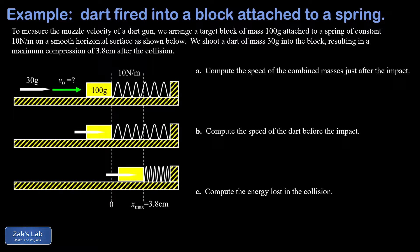In this video, we're analyzing the impact of a dart with a block. The dart and block combination compresses a spring to its maximum compression distance. This setup can be used to measure the initial velocity of the dart based on the maximum compression of the spring. We're going to work through the collision backwards from the maximum compression of the spring.